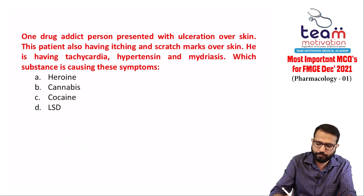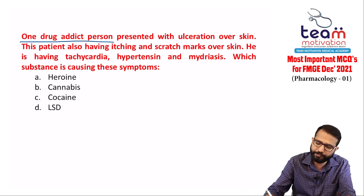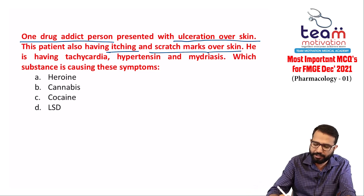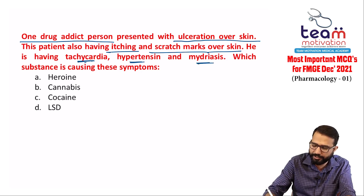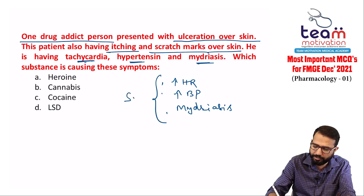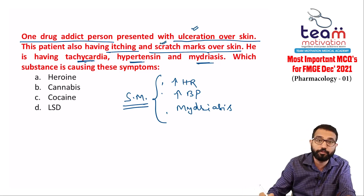Next: a drug addict presents with ulceration over the skin, itching and scratch marks, tachycardia, hypertension, and mydriasis. All of these represent sympathomimetic effects. The patient also has ulceration and scratch marks from scratching — this is tactile hallucination.